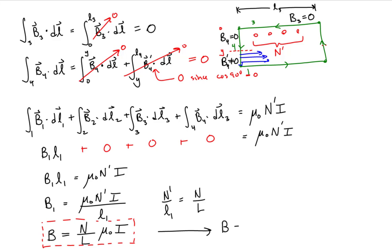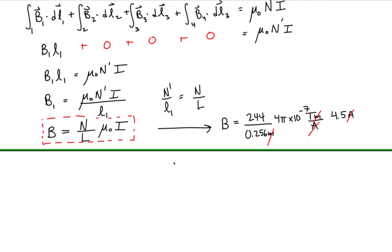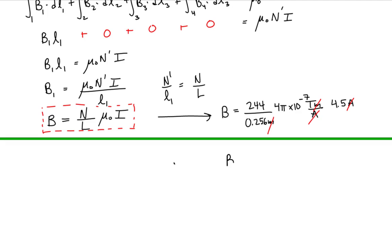Plugging in numbers: the number of loops is 244, the length of the solenoid is 0.256 meters, the permeability of free space is 4π × 10⁻⁷ T·m/A, and the current is 4.5 amps. The amp and meter units cancel, and calculating gives the magnetic field well inside the solenoid equal to 5.4 × 10⁻³ tesla.